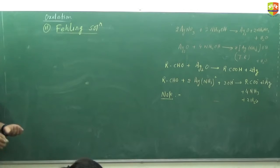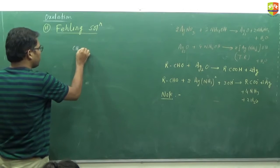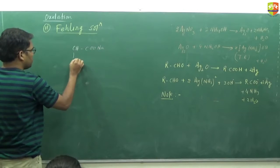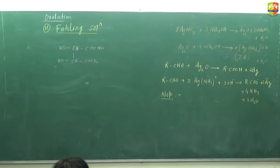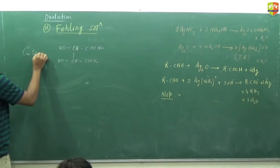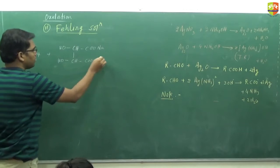Next, Fehling solution. It is a mixture of dilute CuSO4 solution with sodium potassium tartrate and NaOH. The formula is C-O-O-Na, CH-COO-K, OH, OH - this is sodium potassium tartrate, not important. So we have solution of dilute CuSO4 with this and NaOH.